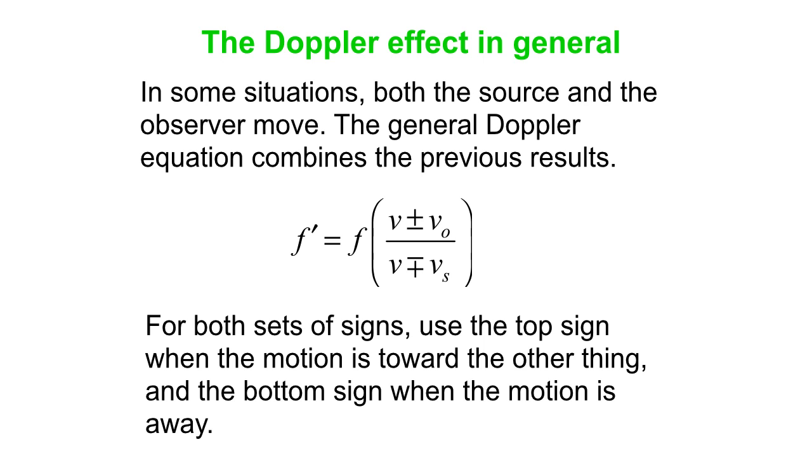Okay, so F prime represents the frequency observed by the observer. F is the frequency that the source emits. And then we've got this factor, V plus or minus V observer, divided by V minus or plus V source, to reflect how much that frequency is shifted.